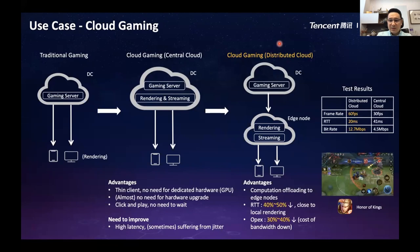So we moved some functions from the cloud server to the edge node. For example, gaming streaming and rendering were moved from the data center to the edge node using our distributed cloud. We can see that, for example, we reduced RTT by roughly 50% using distributed cloud. And for OPEX — which is mainly about bandwidth — we reduced costs by 30 to 40%. We save a lot of bandwidth by using this distributed cloud.